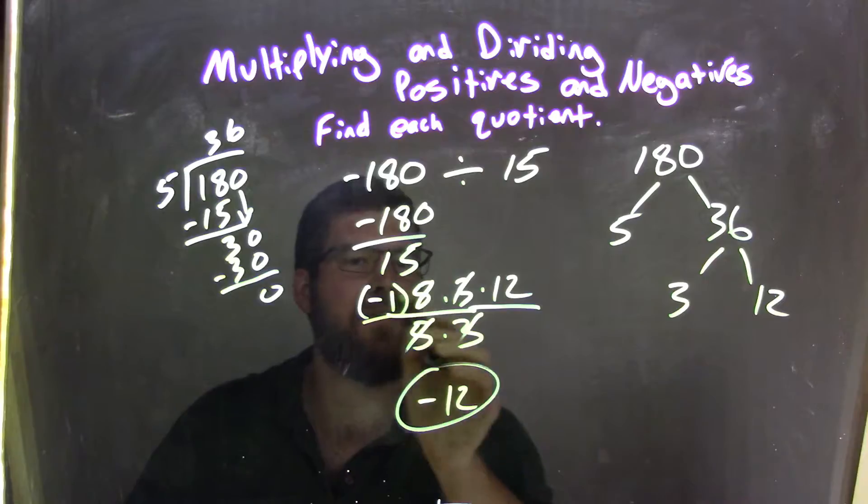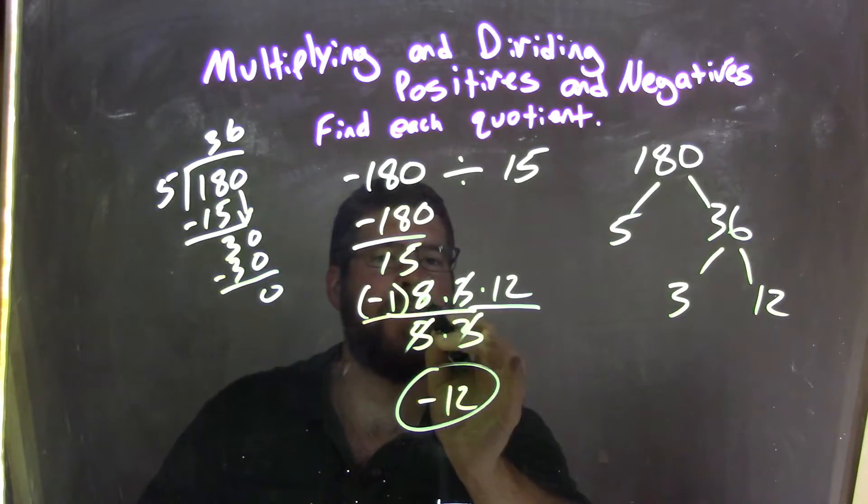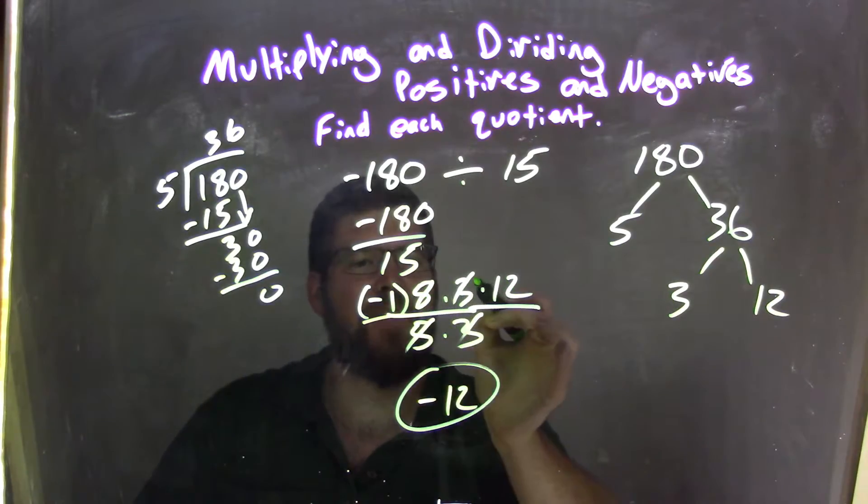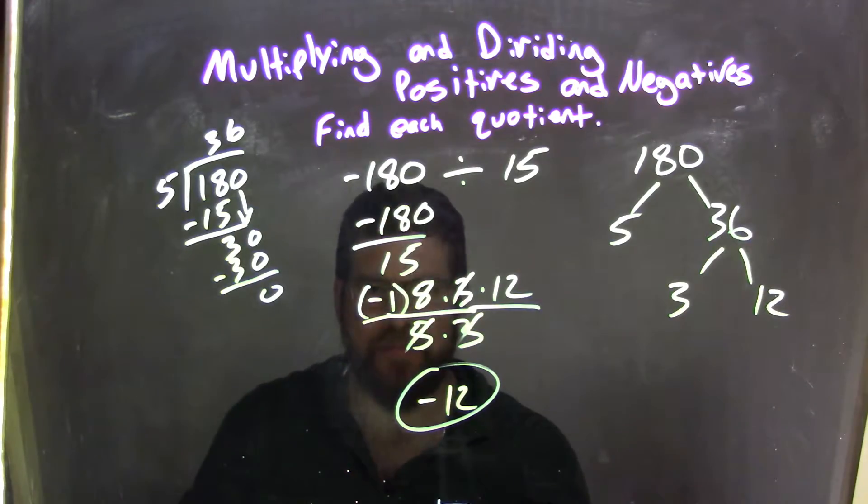The numerator was negative 1, the negative, times 5 times 3 times 12. Cancel out the 5s. Cancel out the 3s. We're left with 12 here. Negative 1 times 12 is negative 12, our final answer.